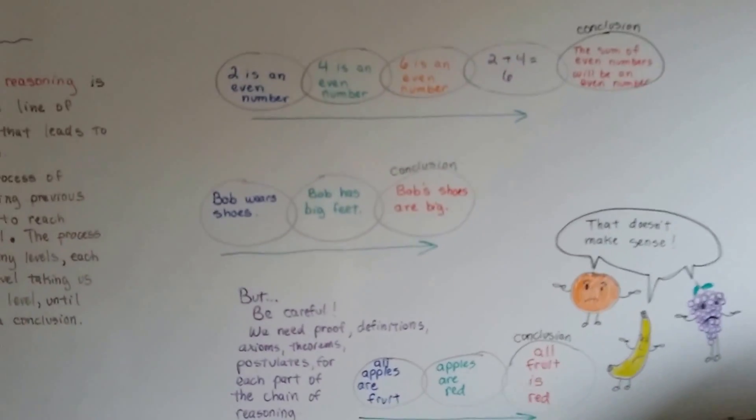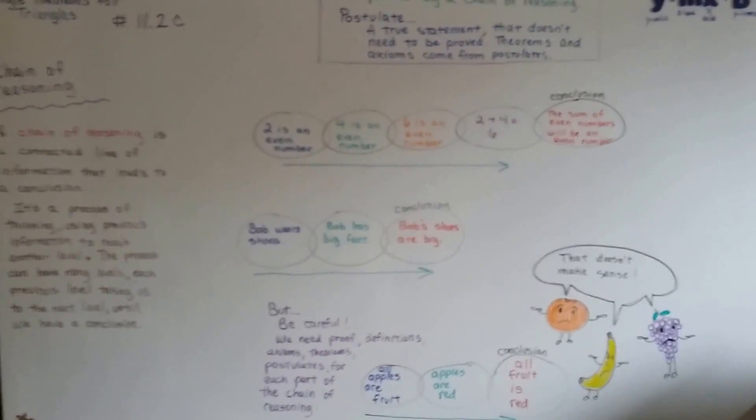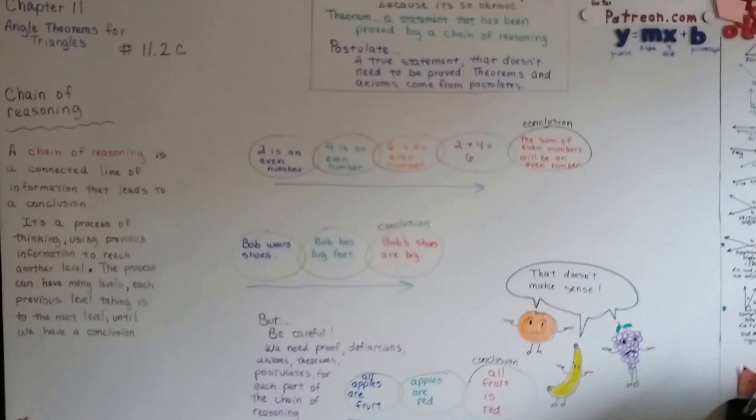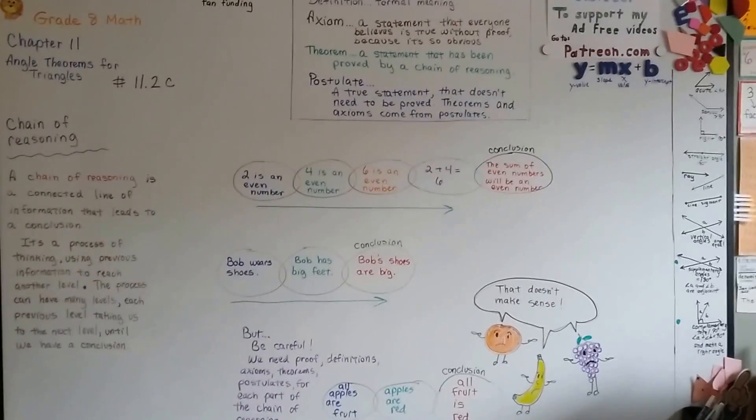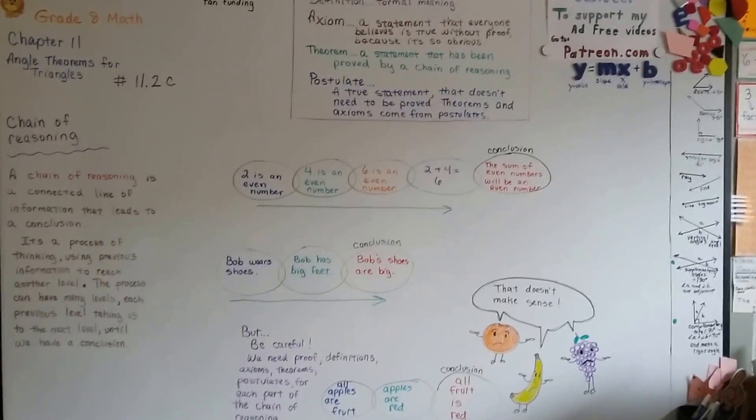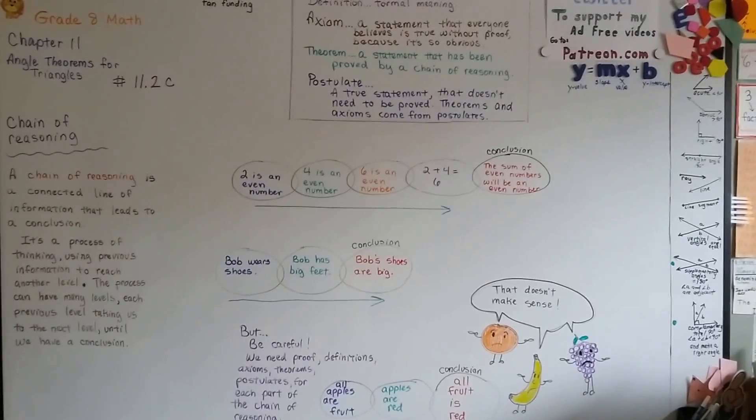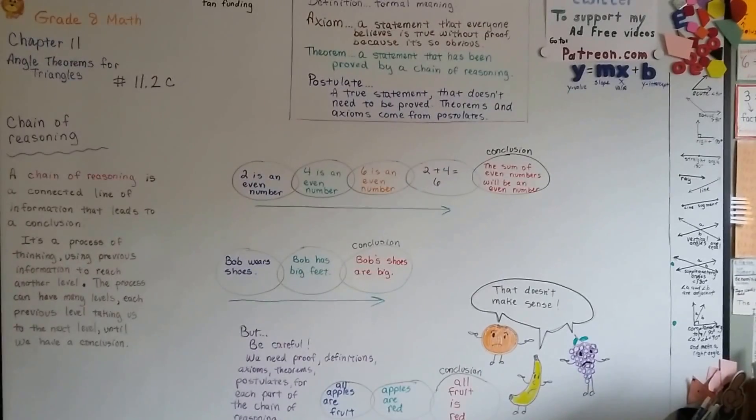Our conclusion will be correct. So it's very important when you're doing a chain of reasoning and you're doing a proof that you use little things along the way like definitions, axioms, theorems, and postulates to make sure our conclusion is going to come out alright.